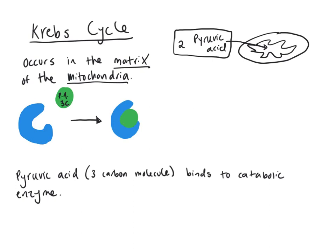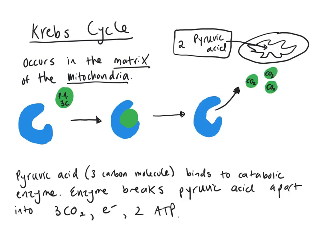Pyruvic acid is the substrate in this cycle — it binds to the active site of the catabolic enzyme. Just like all catabolic reactions, breaking something apart releases energy, heat, and electrons. Our product is also going to be carbon dioxide. Three carbons go in, and CO2 being one carbon each, three carbon dioxides come out. This happens twice per glucose molecule — so for one three-carbon pyruvate, you get three CO2, and every time bonds break, electrons are released.